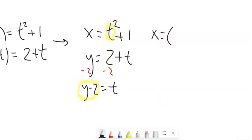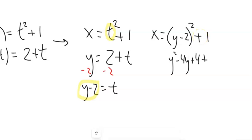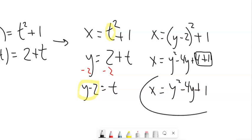In other words, I'm going to substitute this into there for that t. So I could say x equals (y - 2)² + 1 because that was just t. And now, multiply this out: y² - 4y + 4 + 1. Combine up some like terms. And there we go. That parameter has been eliminated.